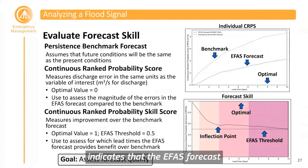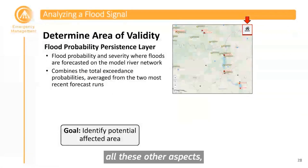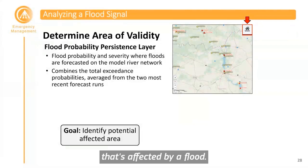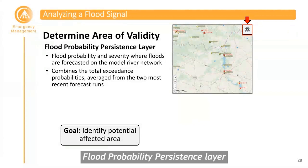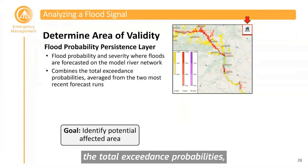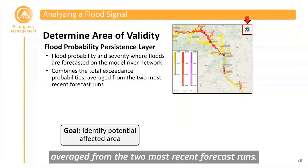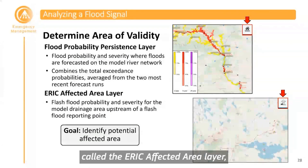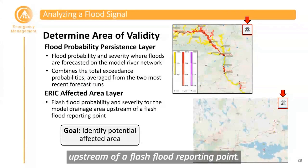After checking these aspects, we may want to determine the area of validity. One downside of the reporting points layers is that they don't show the spatial area affected by a flood. The flood probability persistence layer shows the probability and severity where floods are forecasted on the model river network, combining total exceedance probabilities averaged from the two most recent forecast runs. For flash flooding, the ERIC affected area layer shows the flash flood probability and severity for the model drainage area upstream of a flash flood reporting point.